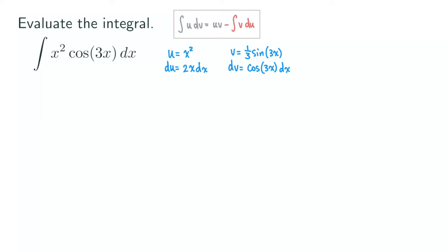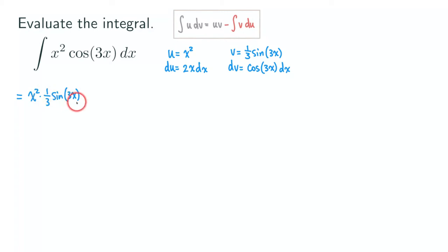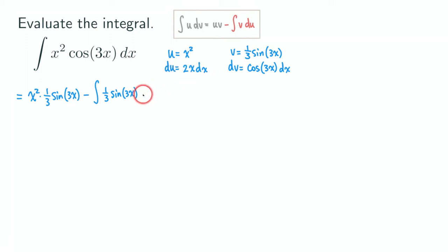Now we can write down the right-hand side of the formula. We have u times v: u is x squared and v is one-third sine 3x, so that gives us x squared times one-third sine 3x. Then we put a minus sign, followed by the integral of v du, which is one-third sine 3x times 2x dx.